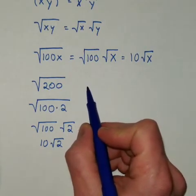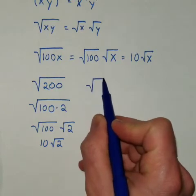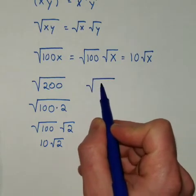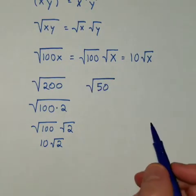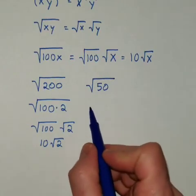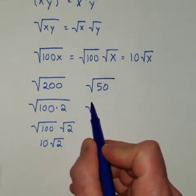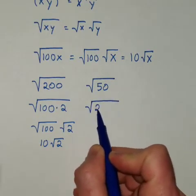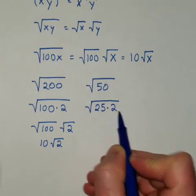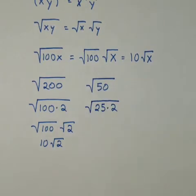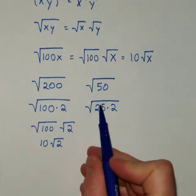We can do this with just about any number. For instance, the square root of 50. Well, 50 is the same as... It has a perfect square factor of 25. So it's the same as 25 times 2. It's also the same as 5 times 10.